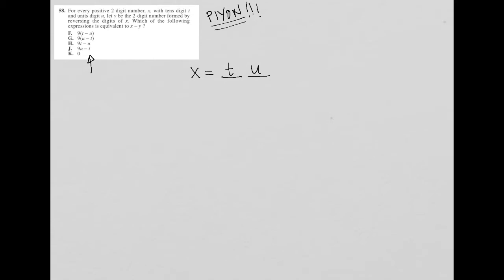Let Y be the two digit number formed by reversing the digits of X. So that means that Y would equal U and then T. Which of the following expressions is equivalent to X minus Y? So we want to figure out what X minus Y is.